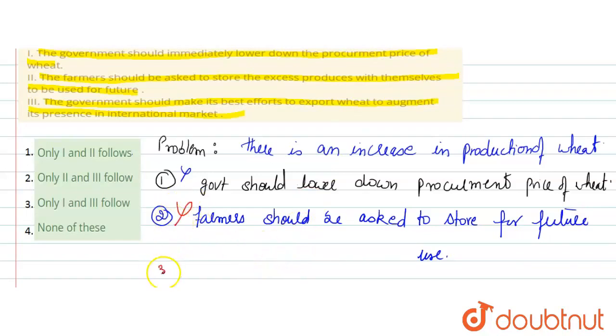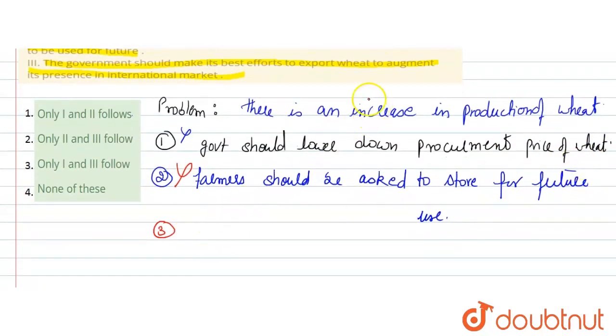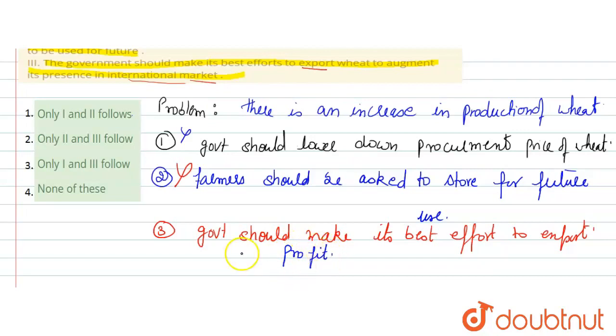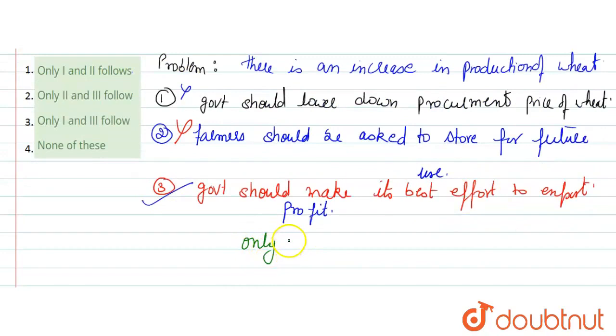Then third course of action says the government should sell it in the international market. Government should make its best effort to export. When it exports, there will be recognition of this wheat in the international market. This is not in any of the given options, so your answer will be option number four, none of these is the correct answer. Thank you.